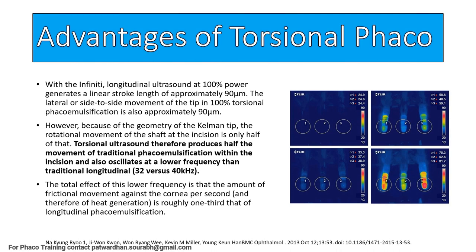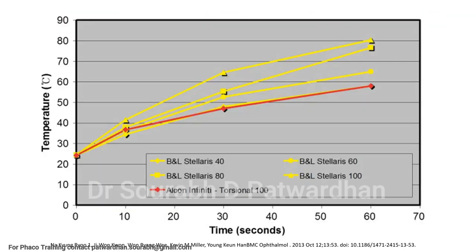Apart from that, torsional FACO also produces very less heat inside the anterior chamber as well as at the wound. Compared to longitudinal FACO, it is just one third of the heat produced, which is excellent. With torsional FACO energy, it is rare — I would say almost impossible — to have a corneal burn. This has been shown in various experiments measuring temperature increases around the FACO tip.